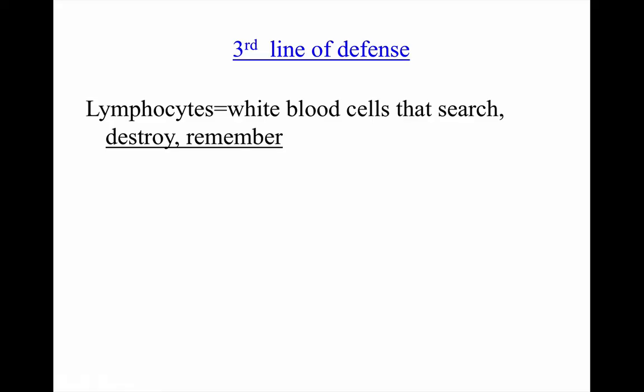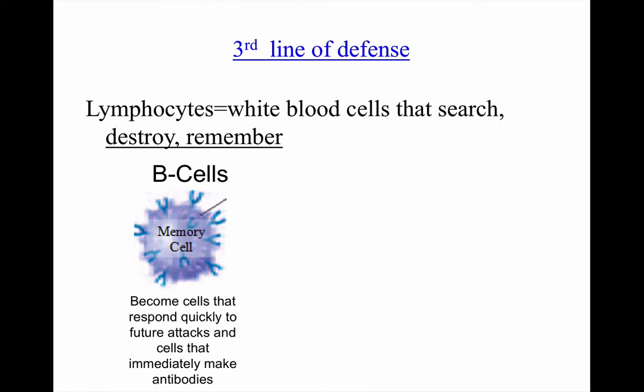Our third line of defense is our lymphocytes — a fancy name for our white blood cells that search, destroy, and remember. The two main ones are B cells and T cells. Your B cells are floating around in your blood and it's their job to be the memory of your immune system. When the chicken pox virus invades your body, you make B cells that are going to remember the chicken pox virus. These little things remember what the chicken pox virus looks like, so you make B cells that remember what a certain bacteria or virus looks like, and then you make B cells that also make antibodies.